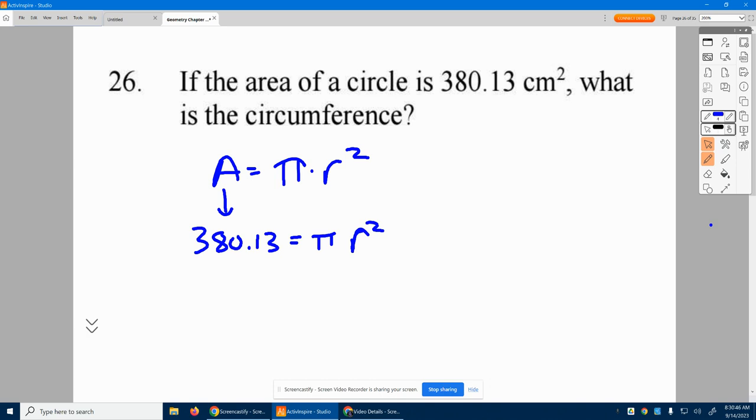So I need the r² by itself. So how do you get rid of multiplying by π? We're going to divide by π, divide by π.